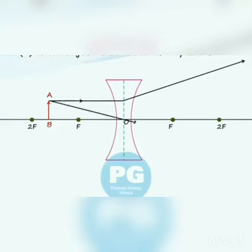Now the second ray we are going to consider is the ray passing through the optical center. It will undergo no refraction and go straight.